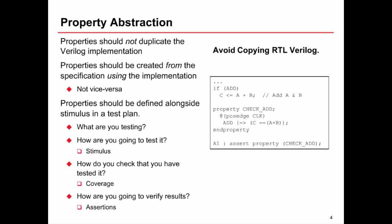So the questions that we need to answer with the properties we write is what are we testing? How are we going to test it? What stimulus do we need? How do we know that we've tested everything that we need to? How are we going to verify the results are correct?